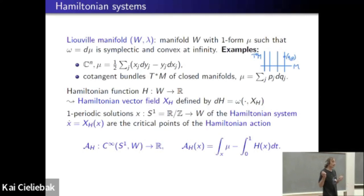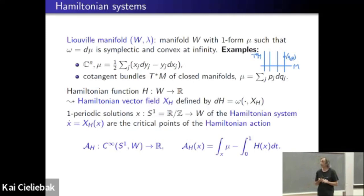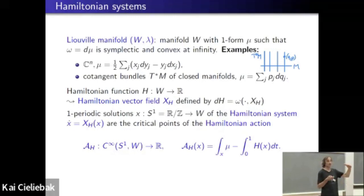If the Hamiltonian doesn't explicitly depend on time, we have conservation of energy, meaning the value of the Hamiltonian is constant along a Hamiltonian orbit. That means instead of periodic orbits of a fixed period, we might also be interested in periodic orbits of a fixed given energy. And that's how a Lagrange multiplier will come in — we're asking for critical points subject to the constraint that they have a particular energy.